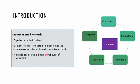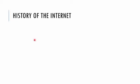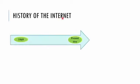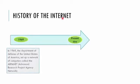The internet is a huge network of computers around the world. A network refers to a group of computers connected together. Now we will discuss the history of the internet. Students, do you know that in 1969, the Department of Defense of the United States of America set up a network of computers called ARPANET?